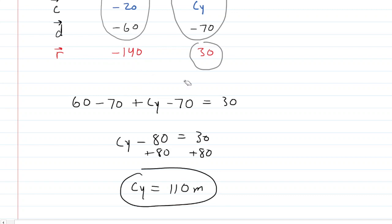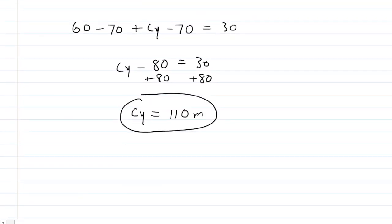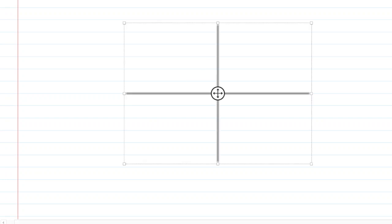In part c, we are asked to find the magnitude of the overall displacement. Now, recall, the resultant has x component of negative 140 and a y component of positive 30. So what we're going to do is put down a new coordinate system here. We'll start out at the origin.